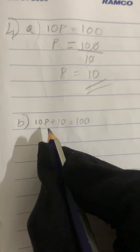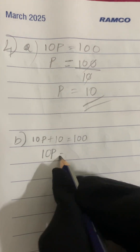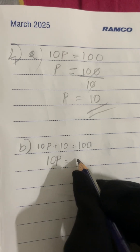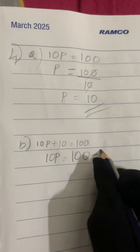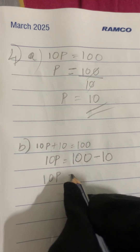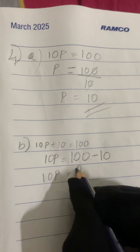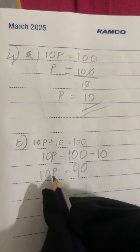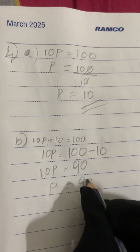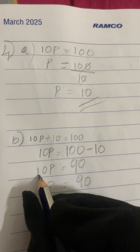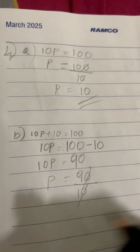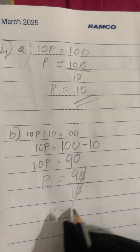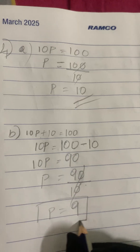Let's solve the B question. Taking 10p on the variable side and 100 on the number side. We shift plus 10 to the numbers side — it becomes minus 10. So 10p equals 100 minus 10, which is 90. Take p down, 90 on the right, shift 10 to the denominator — cancel 10 and 10 — 9 is left. Therefore p equals 9.